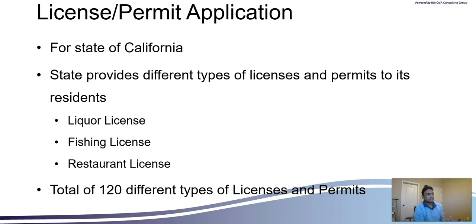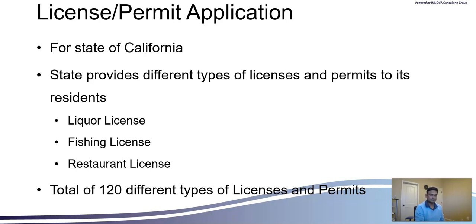We are trying to build a license and permit application for the state of California. The state provides different types of licenses and permits to its residents. Some examples are liquor license, fishing license, and restaurant license. There are a total of 120 different kinds of licenses and permits. So if the state of California has invested into Pega and is looking for Pega to provide a solution to consolidate and manage all 120 different kinds of licensing and permit applications, how would you go about building it?